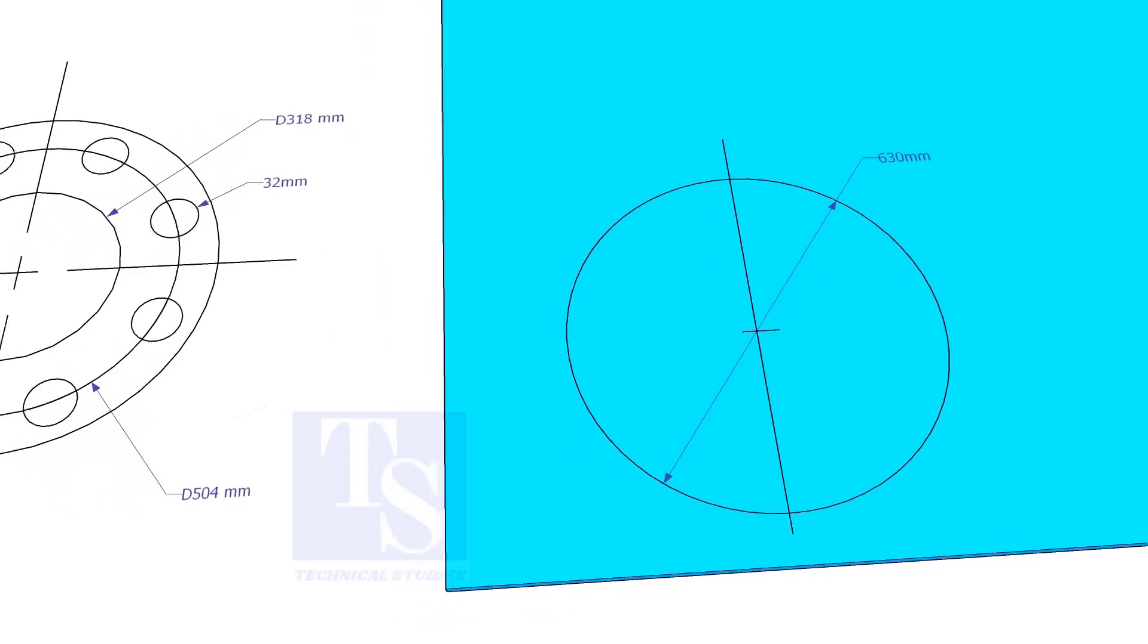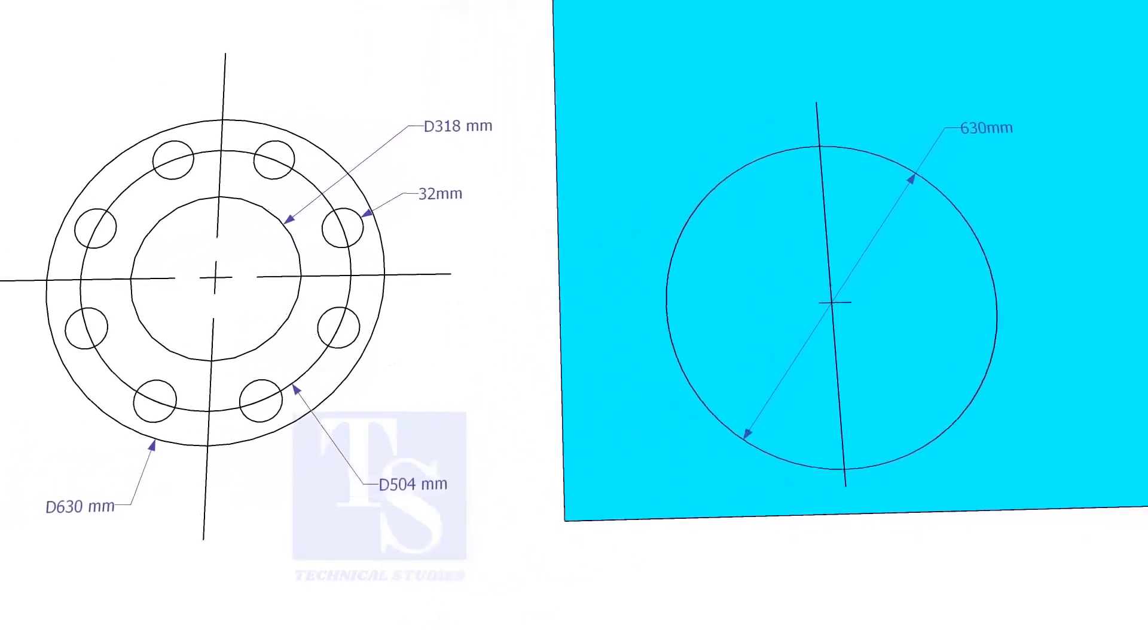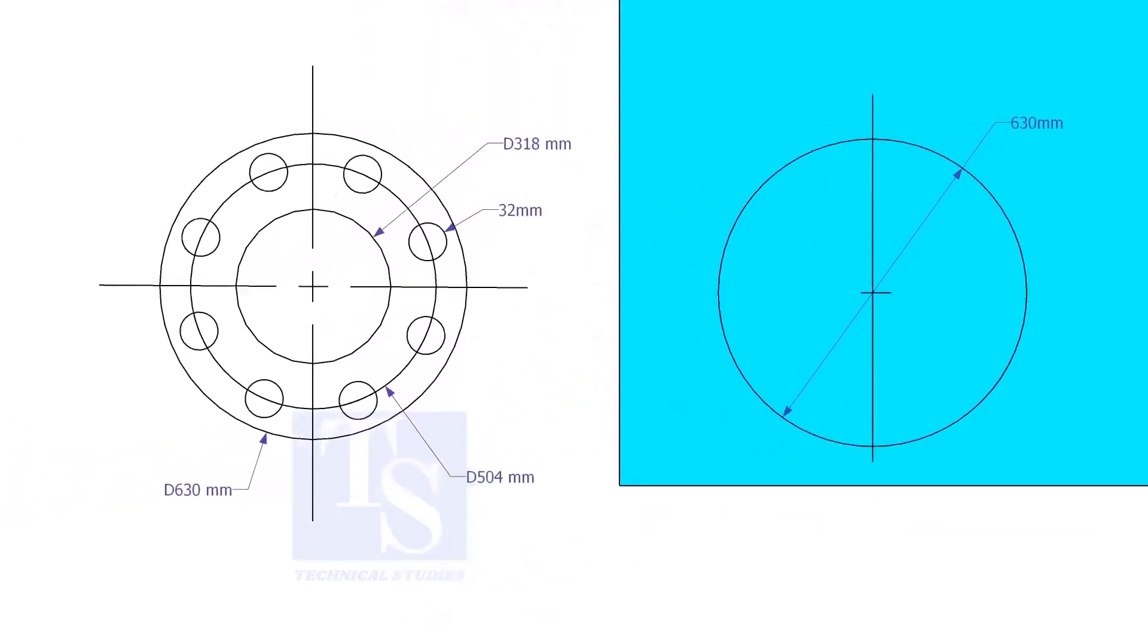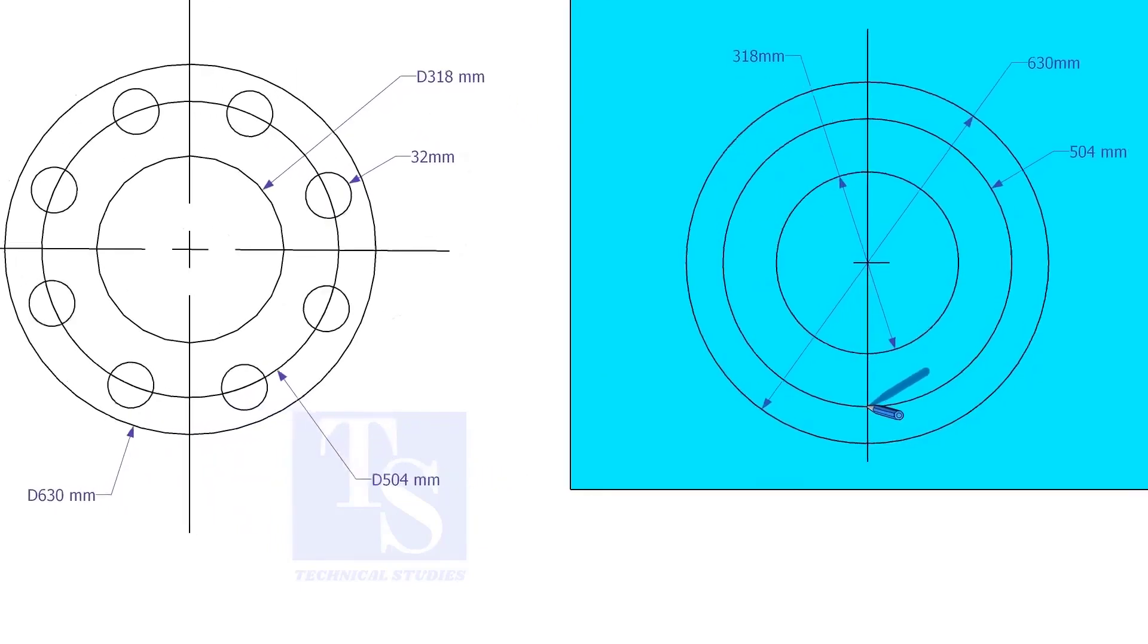Draw the OD and the ID circles. Draw the PCD. Punch mark where the PCD circle cuts the center line.